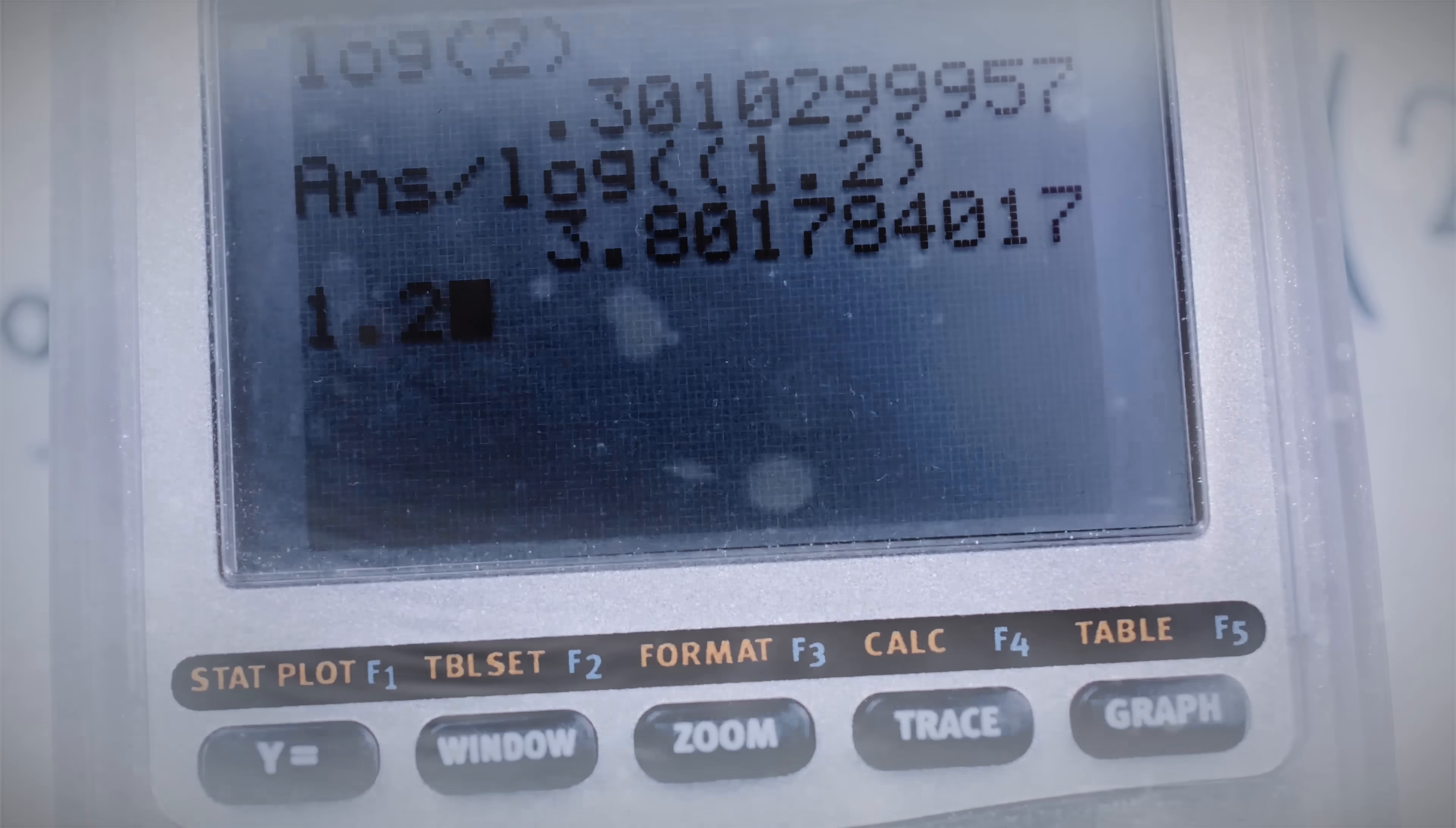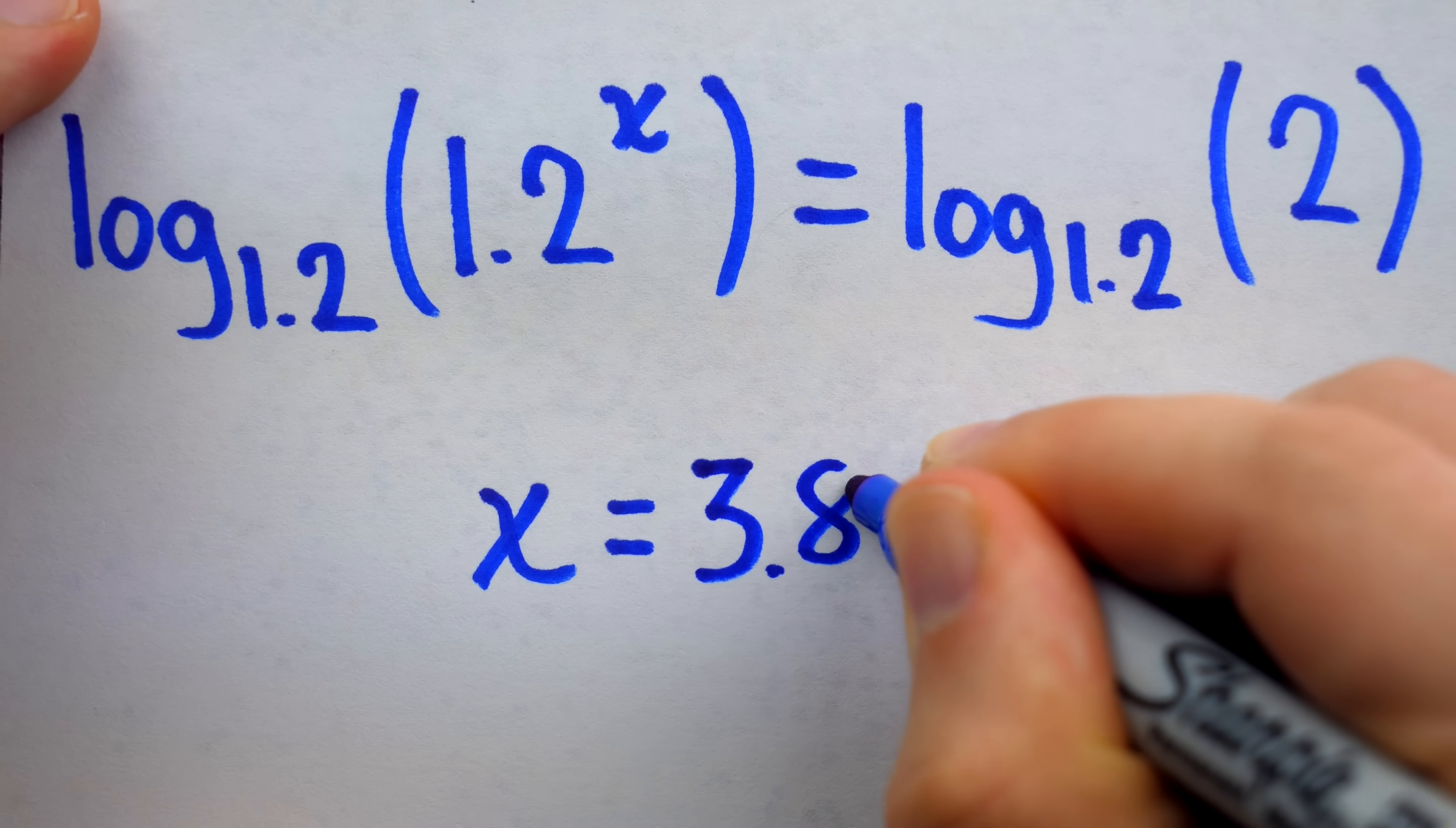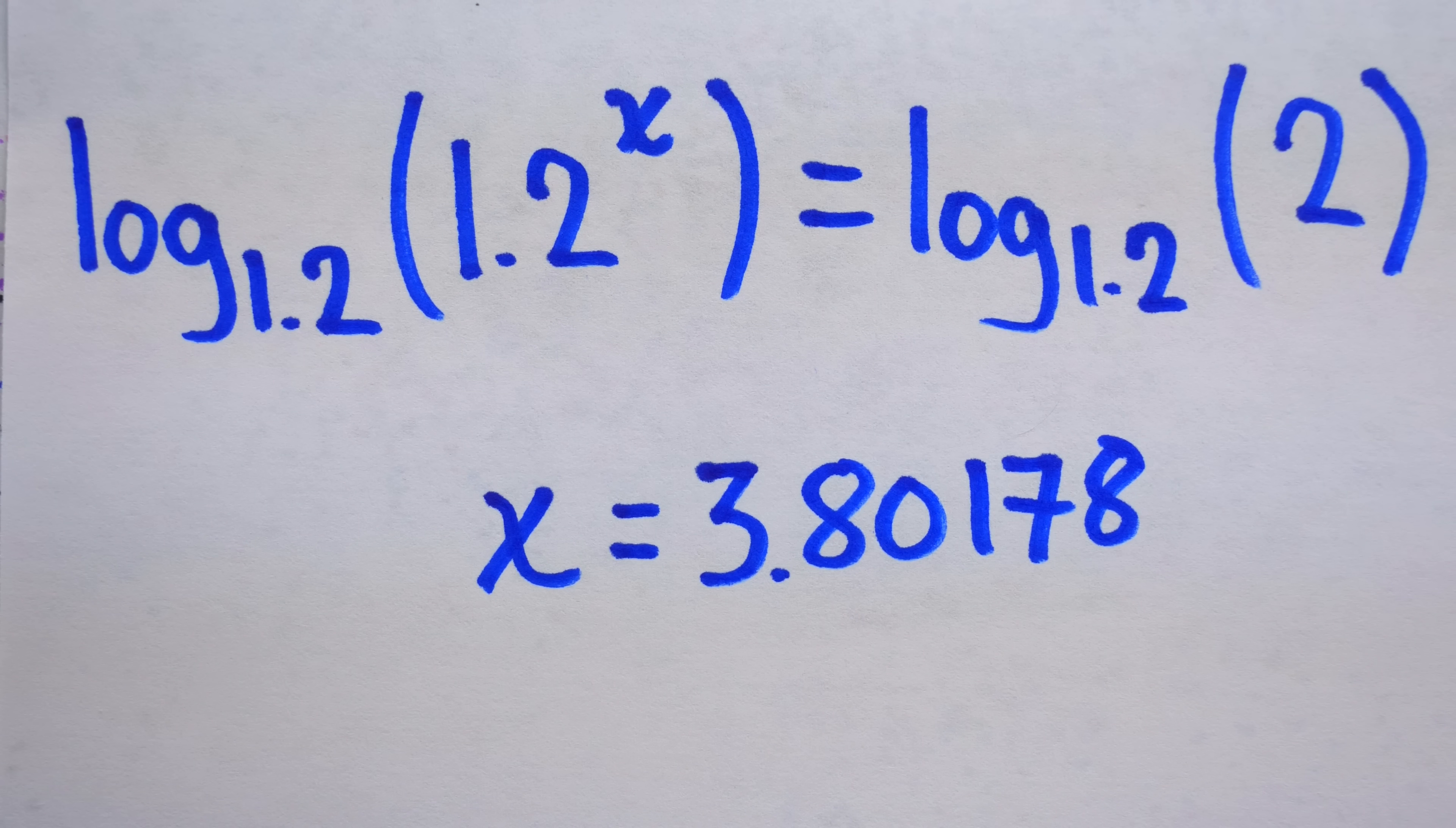We can check our answer by raising 1.2 to this power and confirming that it is very nearly 2. So it would take 3.80178 years for the money to double under these circumstances. That's about 3 years, 9 months, and 23 days. That's easy enough.